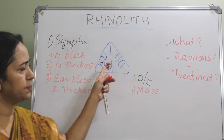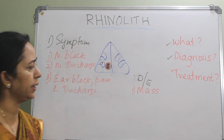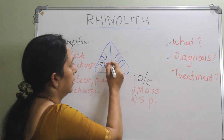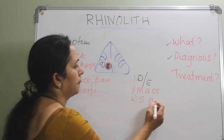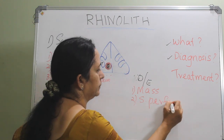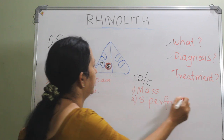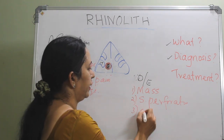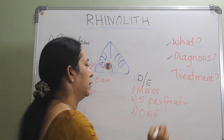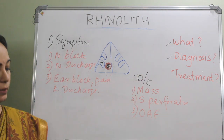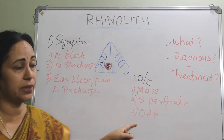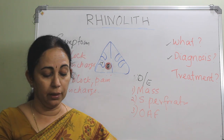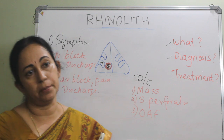If the rhinolith is large enough to cause erosion of the surrounding areas, there can be septal perforation. If it is pressing on the palate, it can lead to an oroantral fistula. Septal perforation and oroantral fistula occur due to erosion caused by a large mass. A large rhinolith can also cause ear discharge.